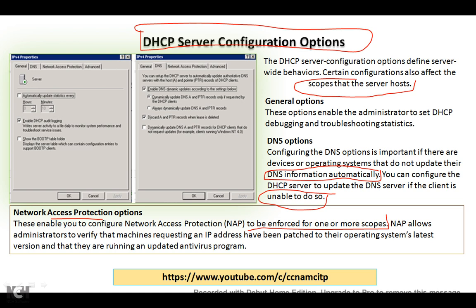NAP allows the administrator to verify that machines requesting an IP address have their operating system updated to the latest version and that they are running an updated antivirus program. We can also configure NAP — Network Access Protection — to check the system's health: what issues or problems exist, and whether the system is up to date.